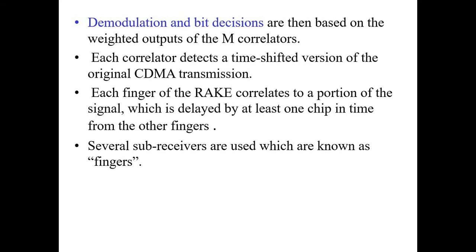When we look at individual signal components, the signal-to-noise ratio power level will be less. But once we combine all M-finger correlators in the RAKE receiver format, we can easily demodulate, and the demodulation threshold level is set accordingly. Based on the error percentage, we set correct filter values. Each correlator directs the time-shifted version, and the key delay observed between these individual components is one chip period, based on which we collect and combine.